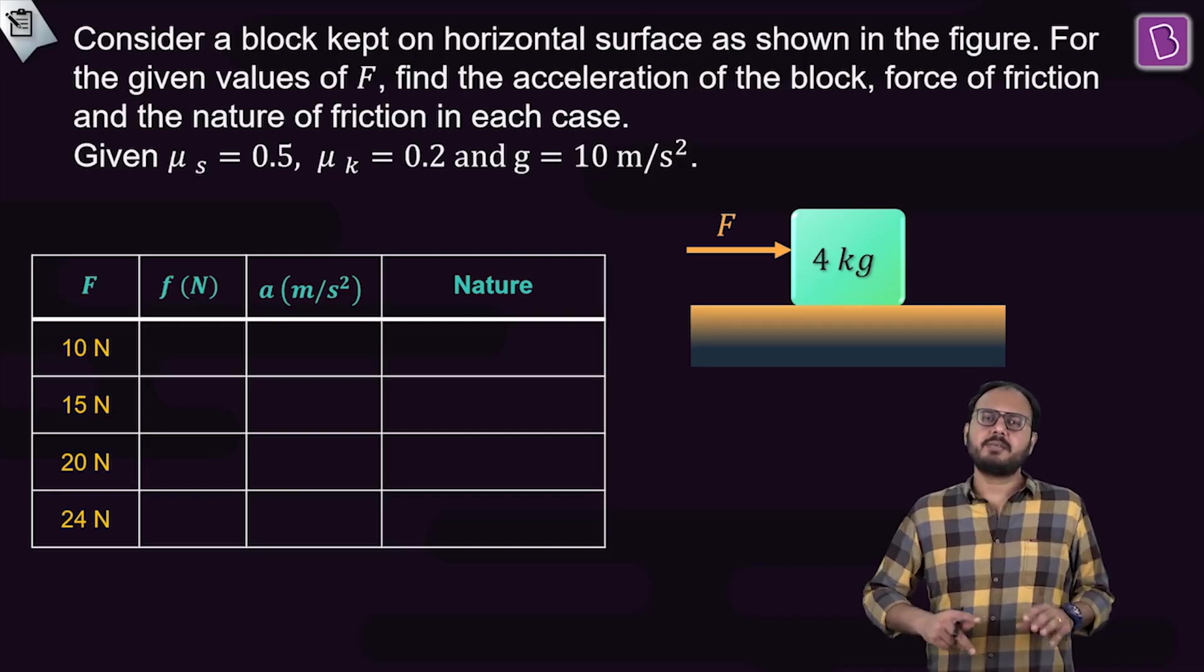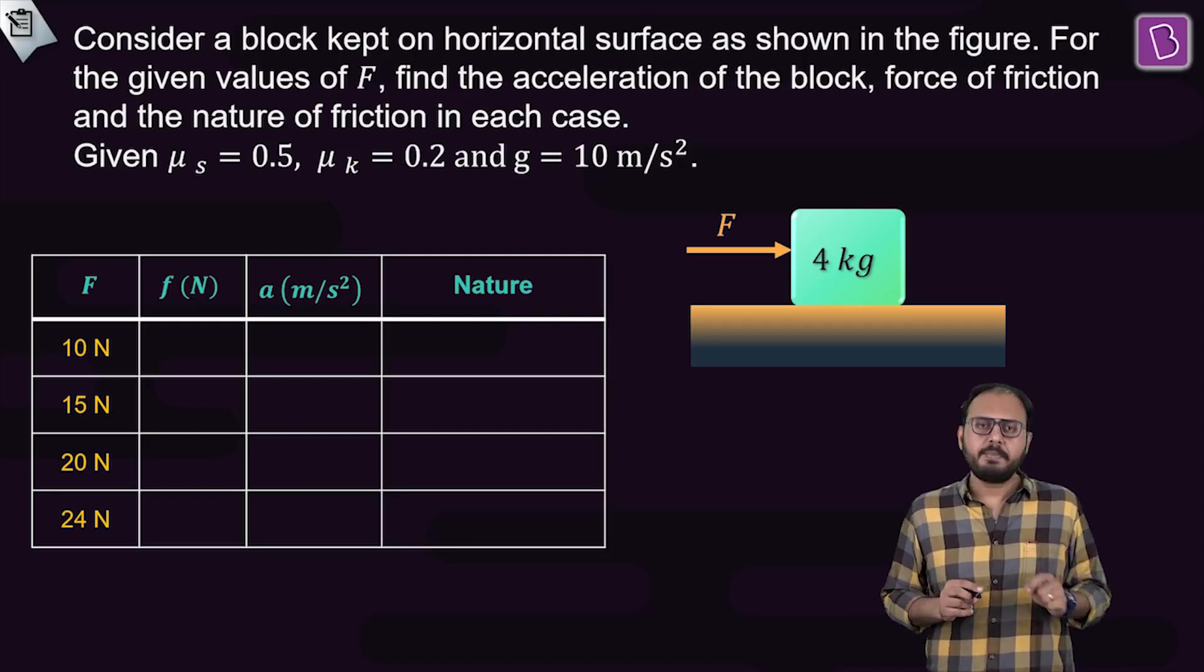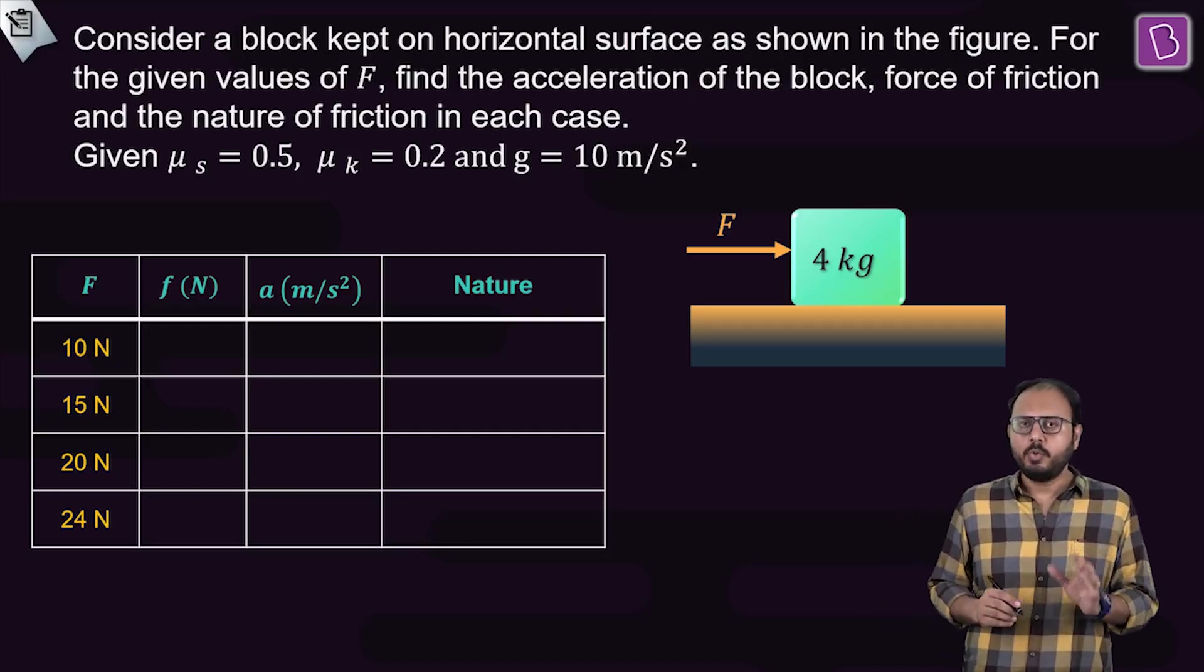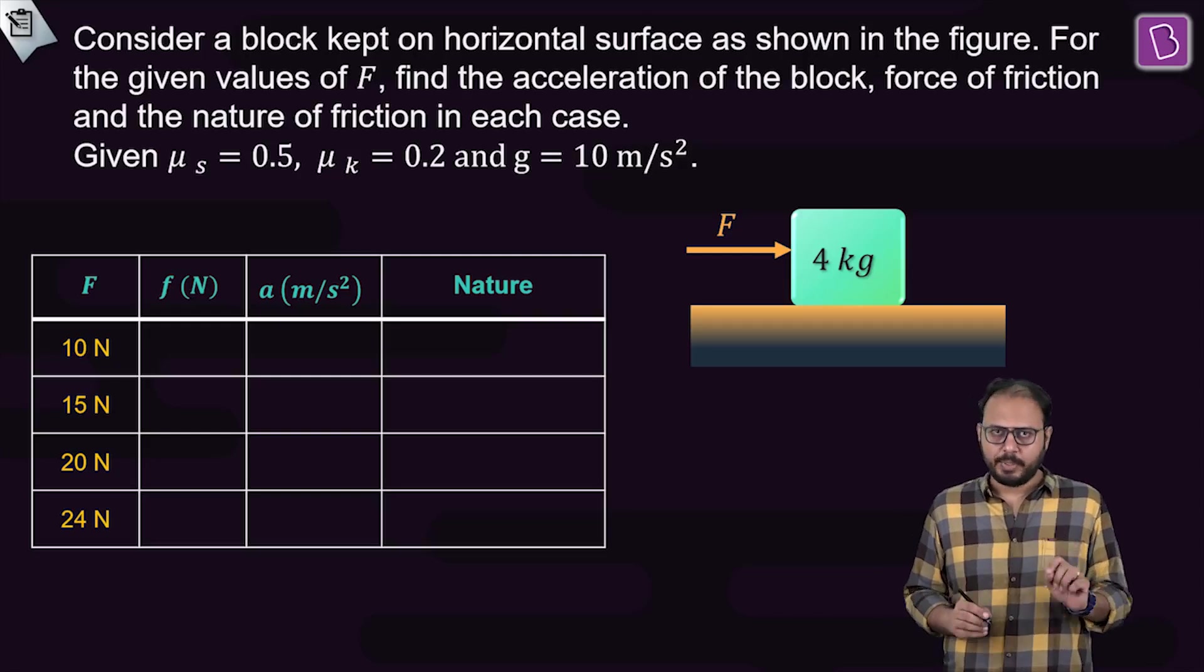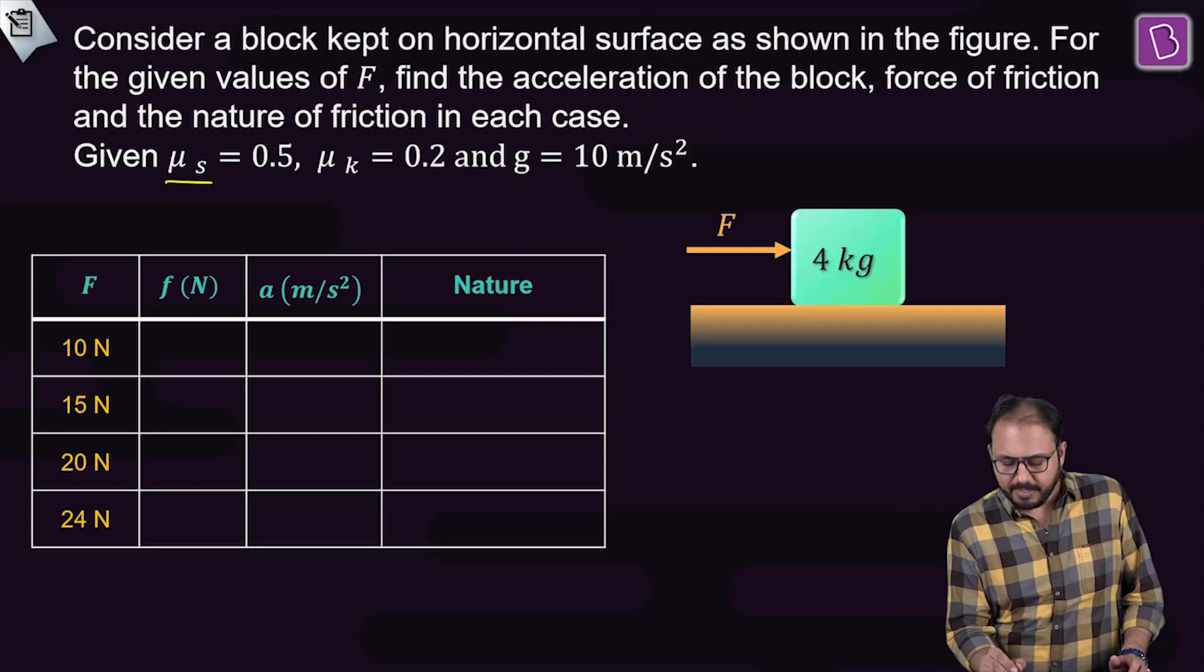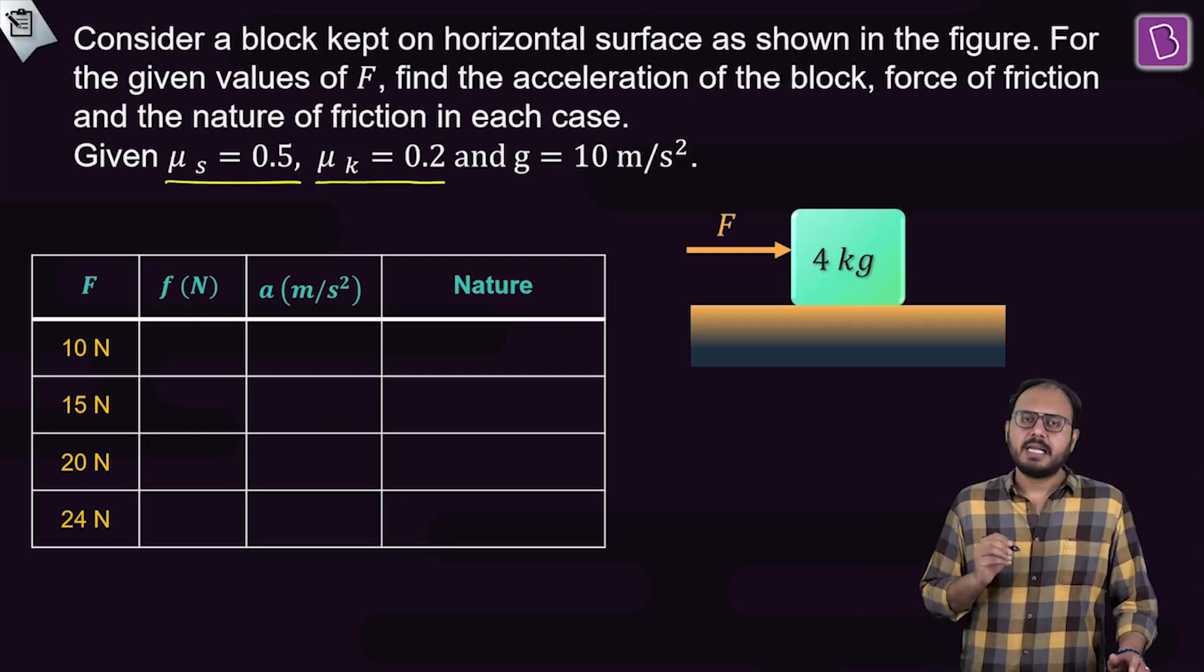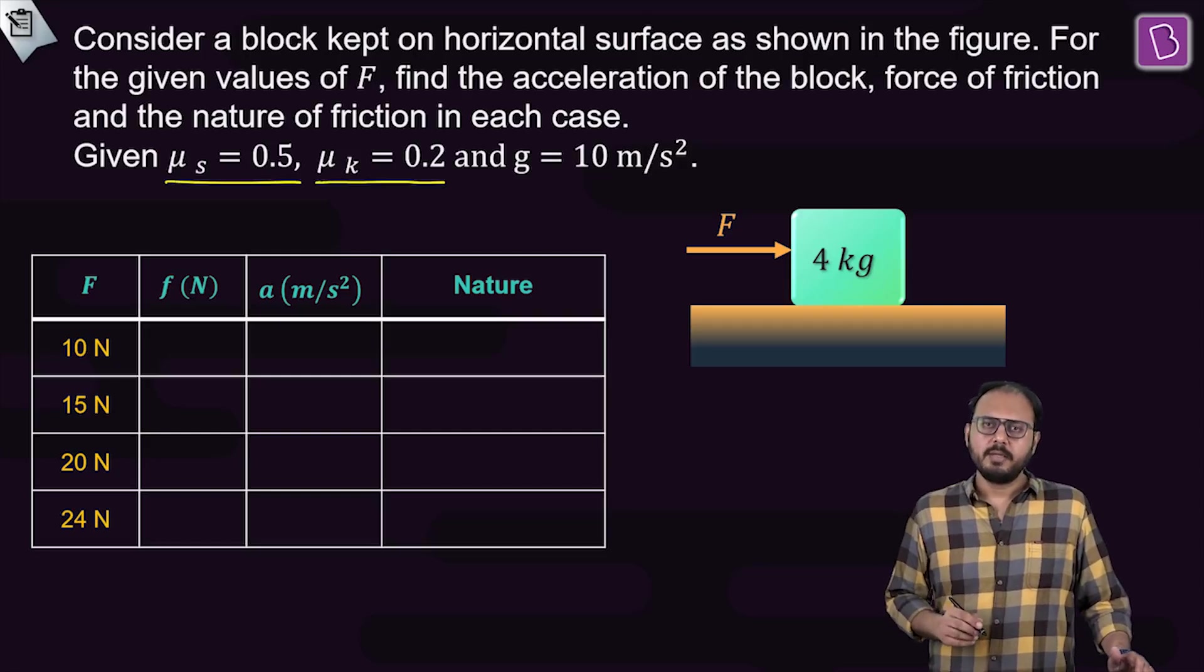I think this is a very simple basic level question I have selected for you. And I have deliberately taken multiple cases to assert my point. You have been given μs value as 0.5 and μk value as 0.2. Clearly μs is more than μk.